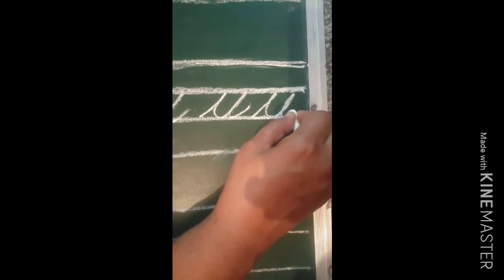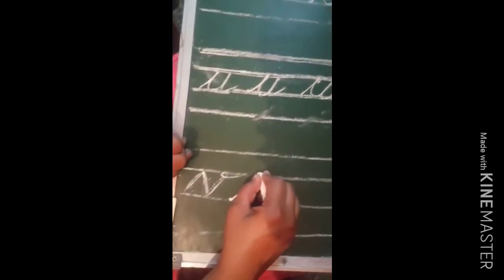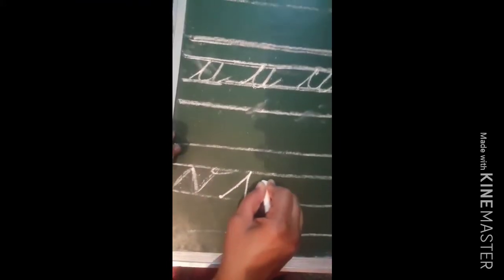Again, see letter U: go up, come down, go up, come down, make a turn — letter U. Now, what comes after U? Letter V. Start from the third line — the blue line — go upside, come down, go upside, and make a turn. This is letter V.